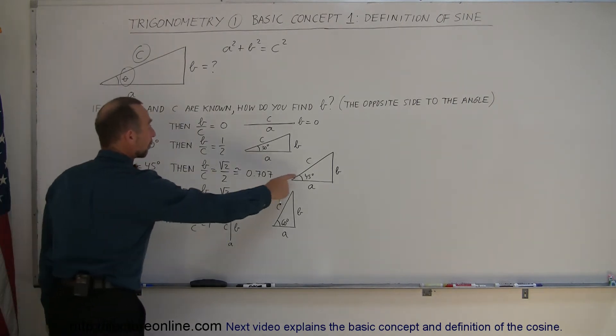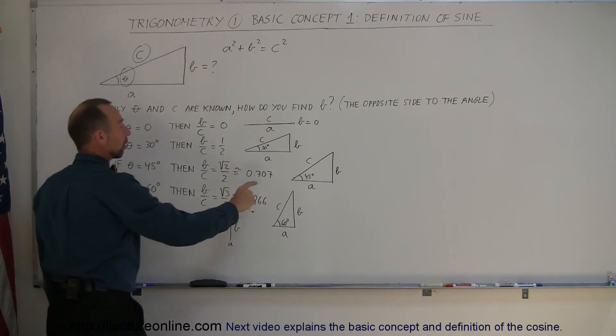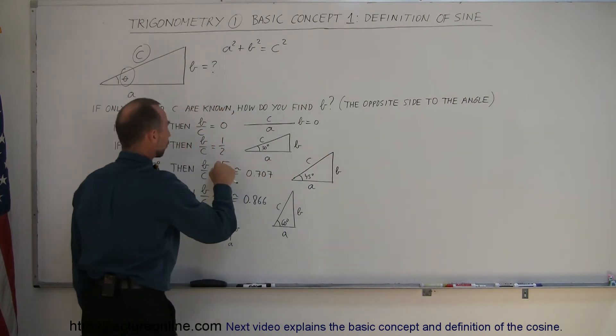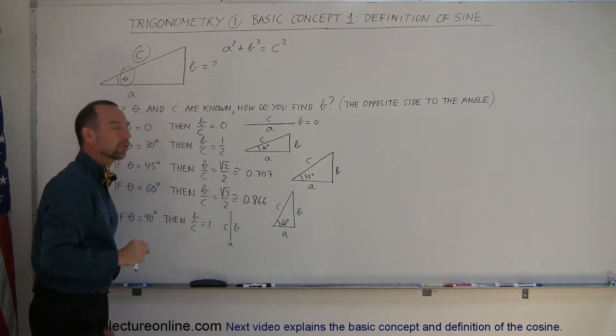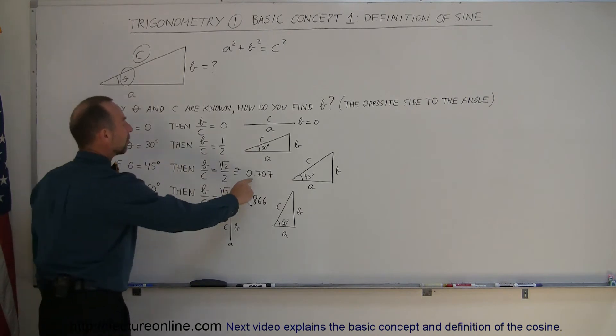If the angle is 45 degrees, then the ratio of the opposite side over the hypotenuse is the square root of two over two, which is approximately 0.707.